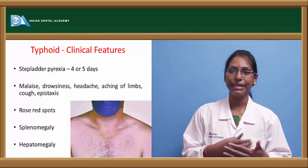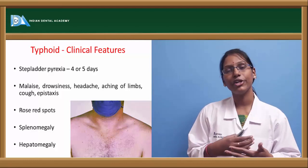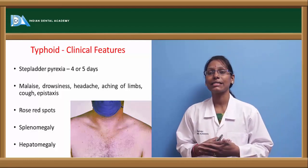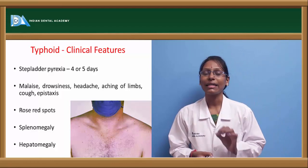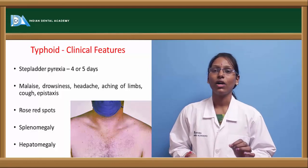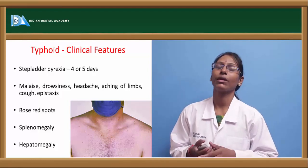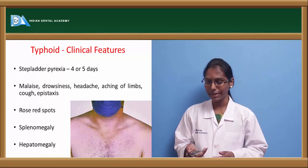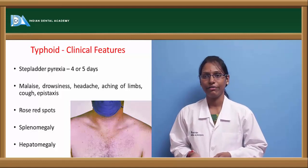However, in children affected with typhoid or paratyphoid fever, they exhibit diarrhea — a characteristic diarrhea called pea-soup diarrhea. The patient also exhibits hepatomegaly at the end of the second week.